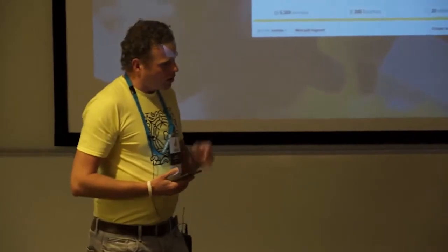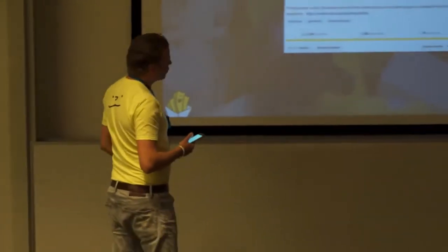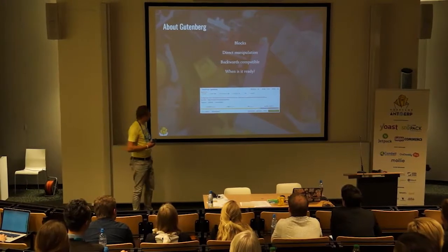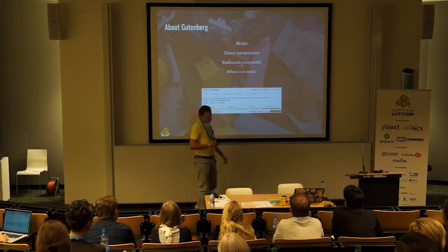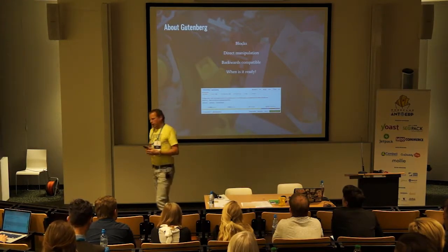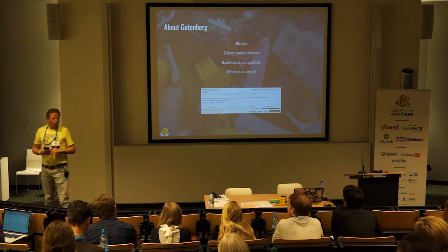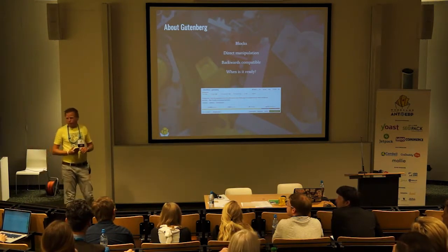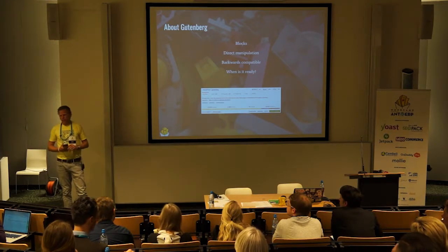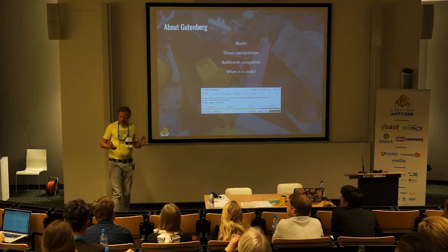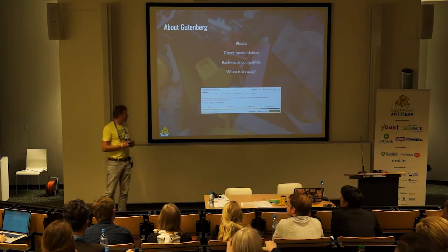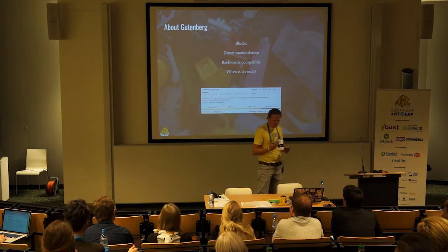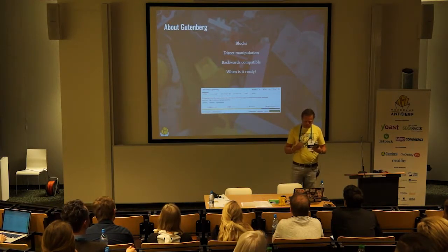This is a screenshot of the GitHub repository for Gutenberg. It says 606 issues open. If you have a product you want to launch in the first quarter of 2018 — as stated by Matt Mullenweg at WordCamp Europe in Paris — that's a very challenging deadline. There are a lot of people contributing so those issues might disappear, but new issues and changes keep coming, making it difficult to define Gutenberg as a finished product.